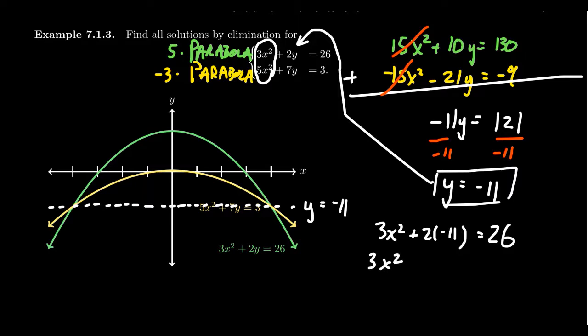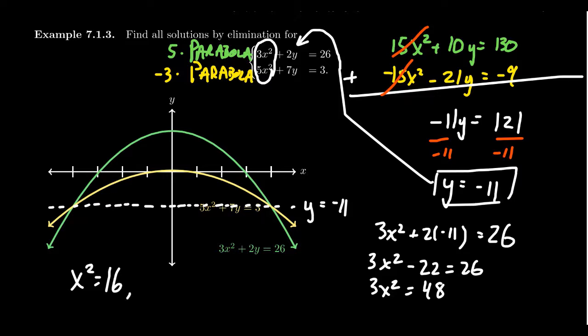So we get 3x² - 22 = 26. Adding 22 to both sides: 3x² = 48. Dividing by 3: x² = 16. Taking the square root: x = ±4. So the two points of intersection are (4, -11) and (-4, -11).